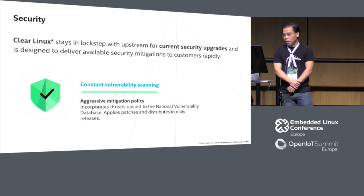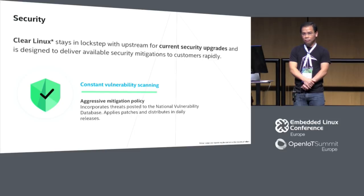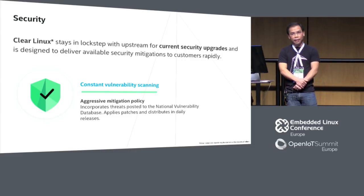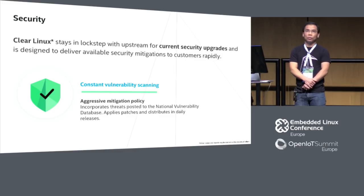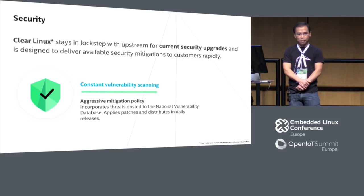Security is very important for Clear Linux and for Intel in general. We want to make sure the software you're running is secure. We do constant CVE scanning all the time. If there are any patches that need to go out, we'll get them out in less than 24 hours — we don't wait three months or six months. We are a rolling release, doing up to 10 releases a week with small incremental updates, so you don't have to wait.